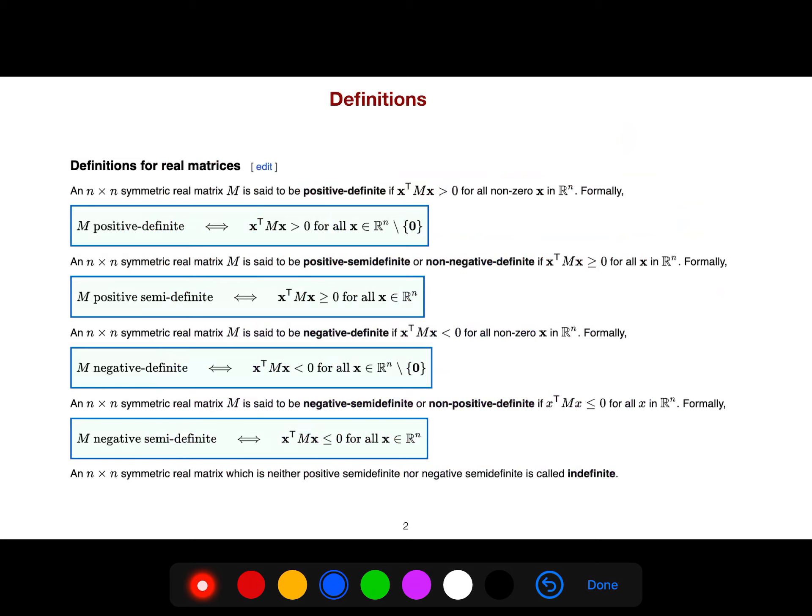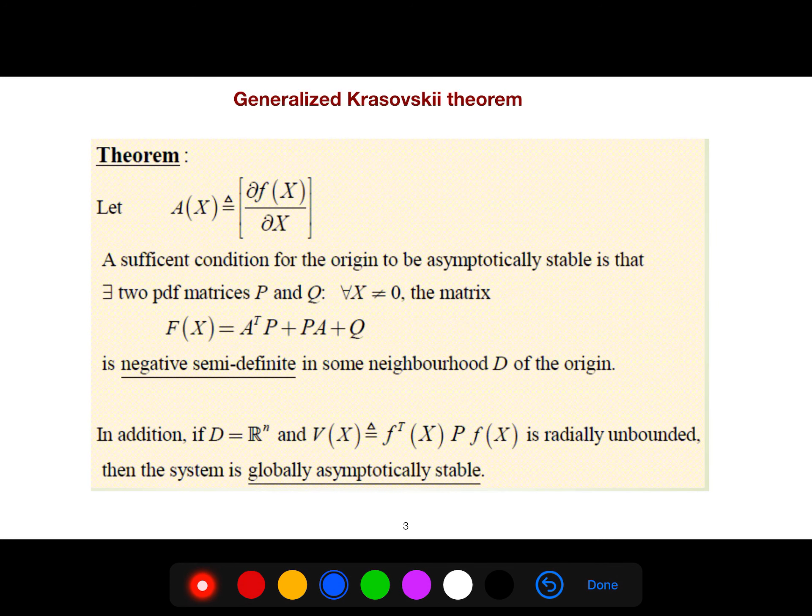There are some definitions. This is really important that we say that M is a negative semi-definite matrix if x transpose Mx is less than 0. x transpose Mx is just the scalar. It's a scalar, and it could be less than 0. If it is less than 0, we say that M is negative semi-definite.